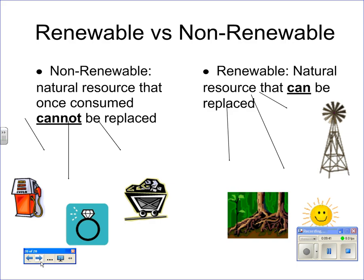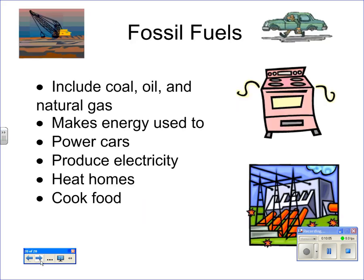Renewable resources are ones that can be replaced, such as solar, wind, and hydroelectric energy. Non-renewable resources cannot be replaced quickly, including oil, certain minerals, and coal. Fossil fuels — natural gas, oil, and coal — are used to produce the energy we use in daily life. Fossil fuels are also used to make many products; all the plastics, fiberglass, and many other materials are made from fossil fuels.